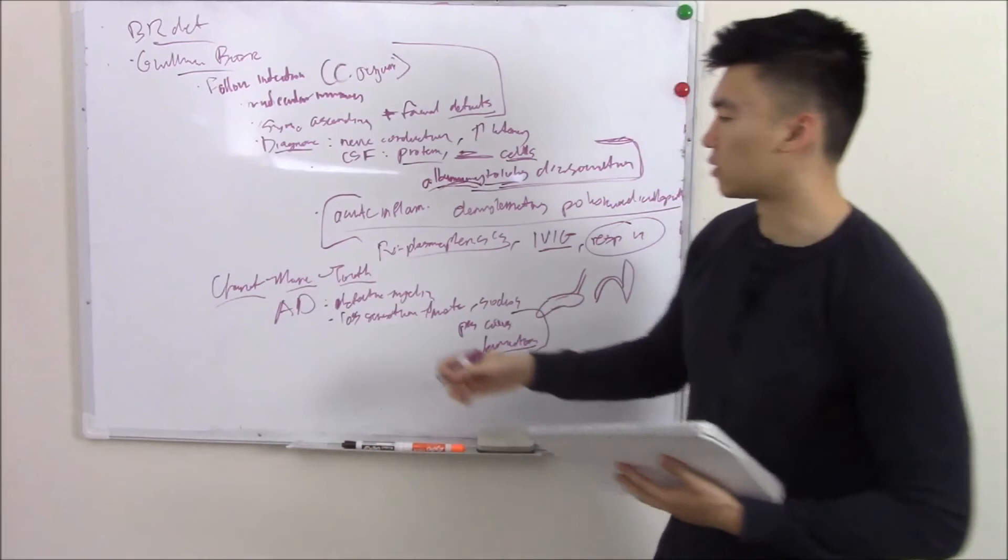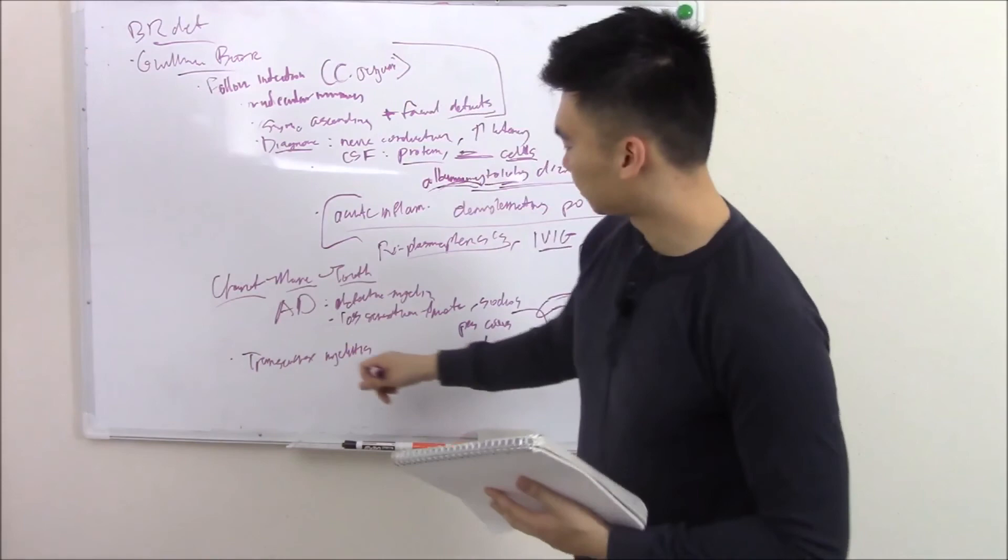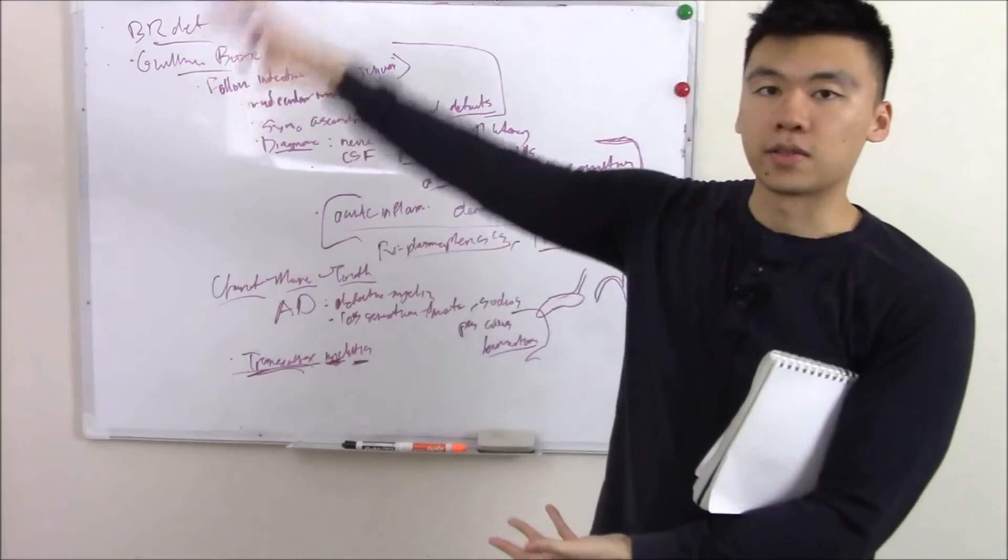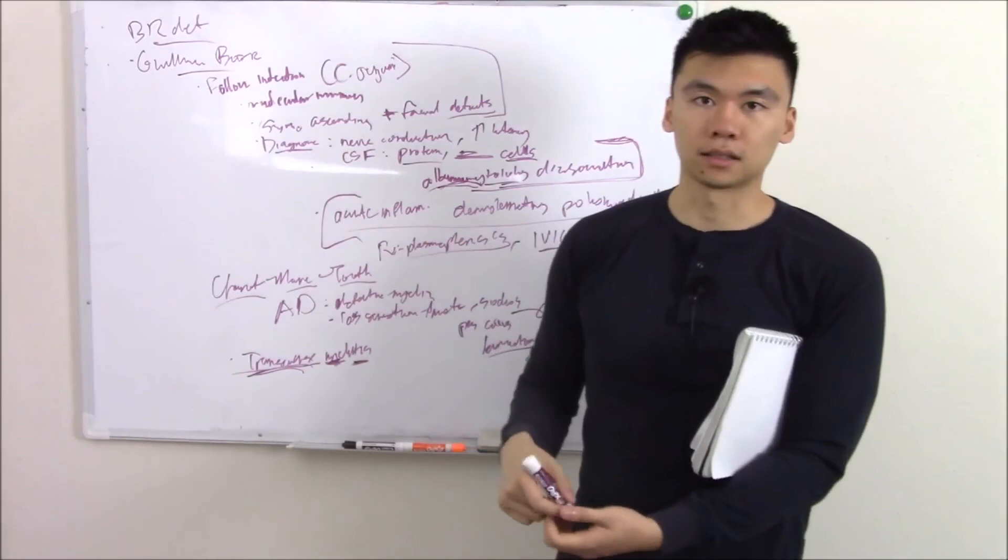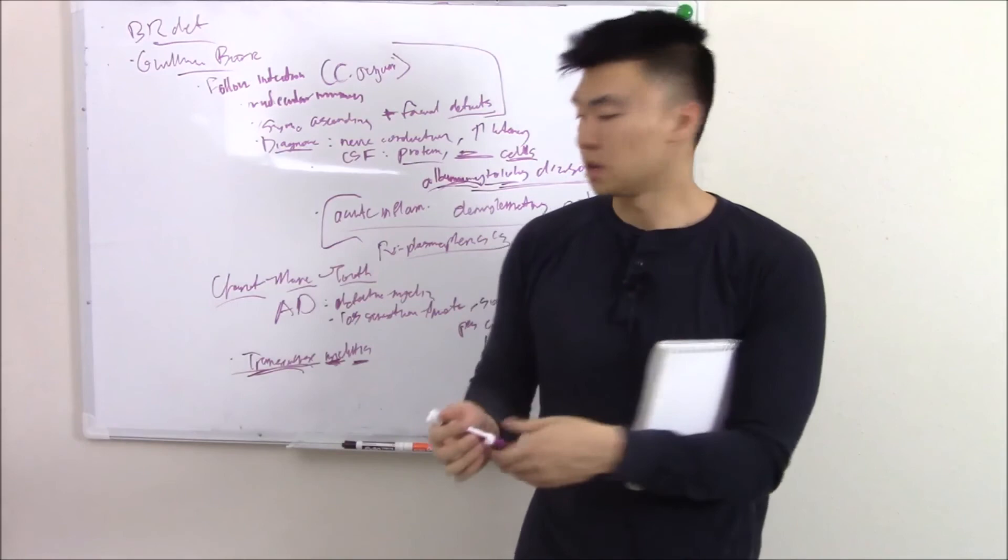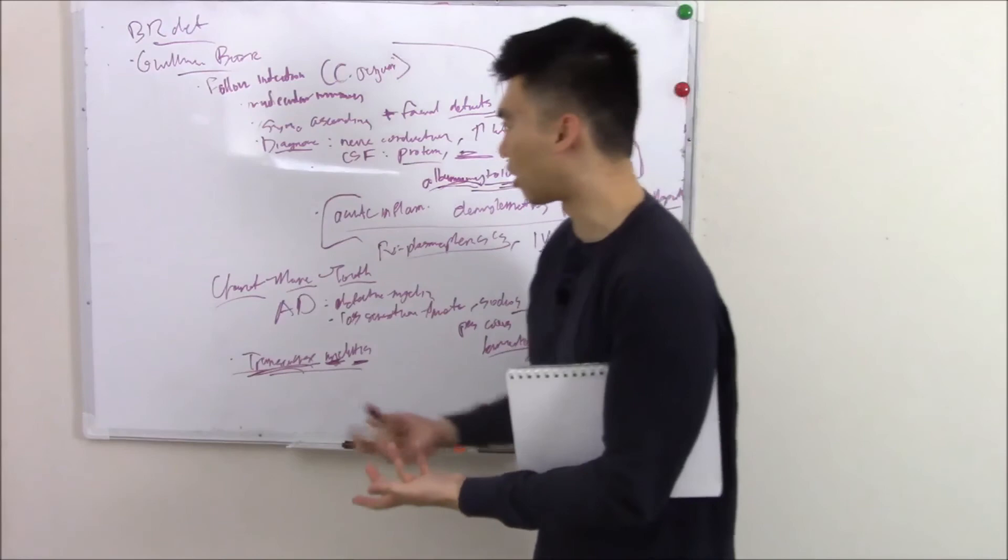Just a few more to round things off. Transverse myelitis. This is inflammation—itis. Myelo means spinal, so inflammation of your spine. Transverse, so inflammation throughout your entire spine, just transverses your entire spine. What can cause this? Everything we just talked about—every single thing we just talked about in this whole video can cause inflammation in your spine. Things we didn't talk about, like trauma. Anything that damages your spine can cause inflammation, autoimmune destruction, demyelination of your spine. So you get transverse myelitis.